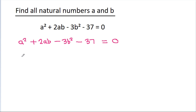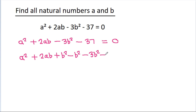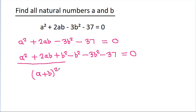It is a squared minus 2ab. And if we add b squared and subtract b squared, minus 3b squared minus 37 is equal to 0. And a squared minus 2ab plus b squared gives (a minus b) squared. And minus b squared minus 3b squared is minus 4b squared, that will be equal to 37.